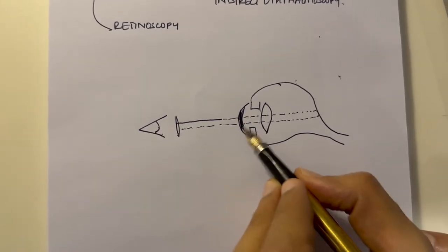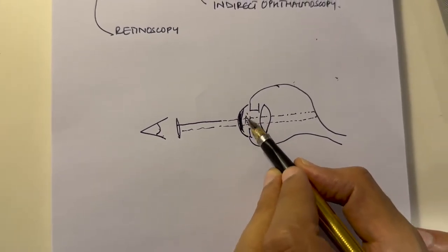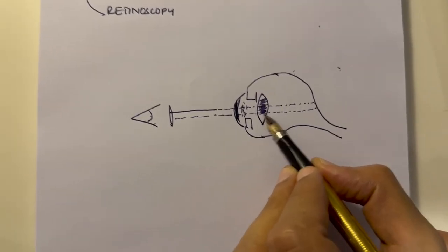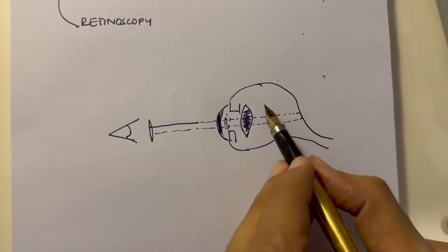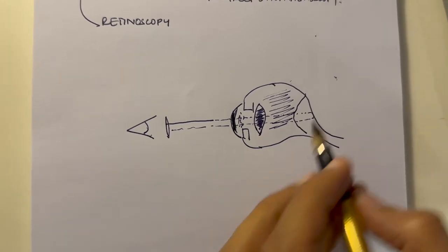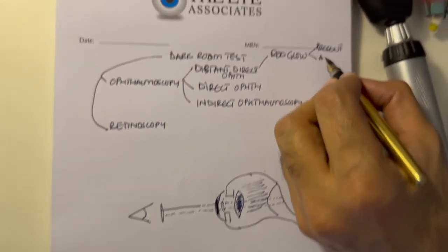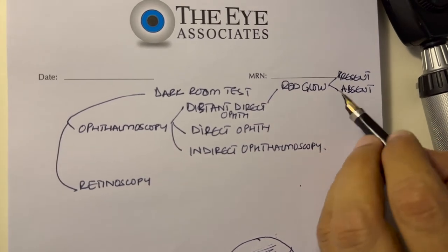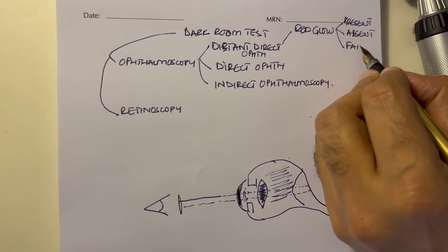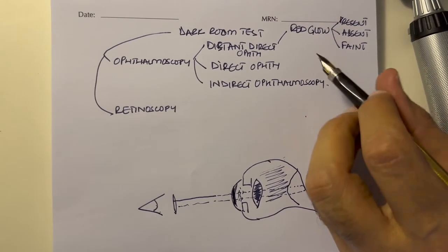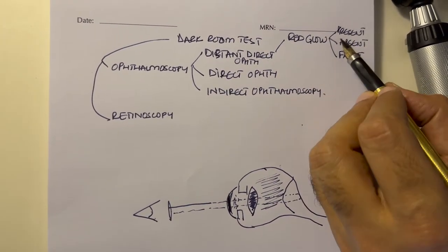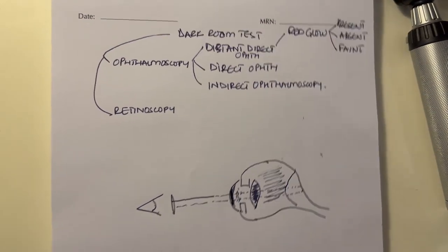If there is an opacity in the cornea, any activity in the anterior chamber, a lens opacity such as a cataract, any vitreous hemorrhage, or a retinal detachment, then either the red glow will be absent or, depending on the density of the opacity, it will be faint. The first thing you are examining through a distant direct ophthalmoscope is the red glow, which can either be present, absent, or faint.